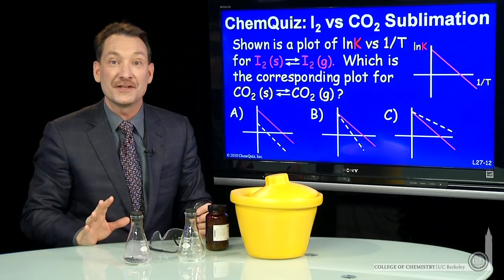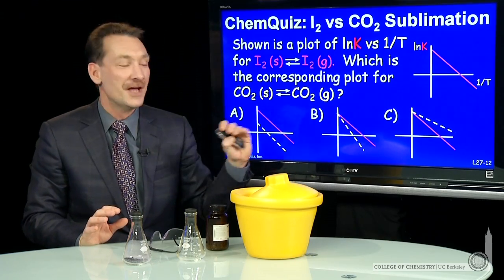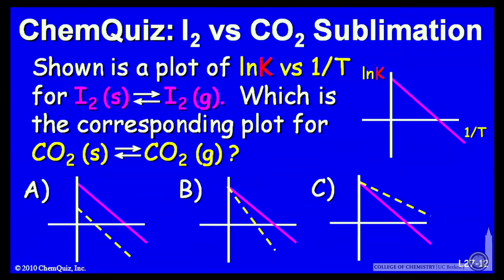Entropy of sublimation about the same means the intercept of these two plots should be about the same. So B and C are possible explanations.